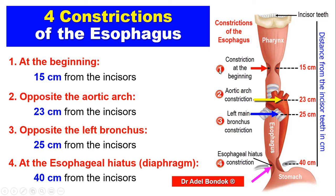To summarize the four constrictions: first at the beginning (pharyngo-esophageal junction) at 15 cm; second at the aortic arch at 23 cm; third where crossed by the left main bronchus at 25 cm; and fourth at the esophageal hiatus of the diaphragm at 40 cm from the incisor teeth.